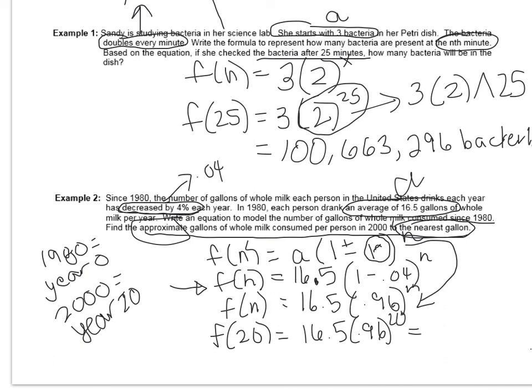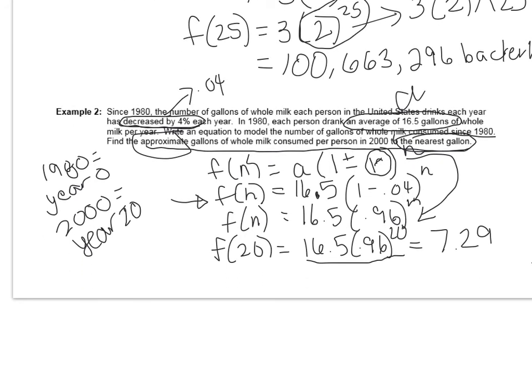When you round something to the nearest inch or the nearest foot or the nearest gallon, you're not going to have any decimal points on your answer. So when I took a look at what 16.5 times 0.96 raised to the 20th power was, I got a decimal that looked like this. So my final answer here is going to be 7 gallons. Because 7.29 rounds down to 7 gallons. And that would be to the nearest gallon.